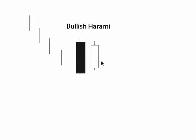The next candlestick is going to open above the close of the previous day and close below the open of the previous day. So it's an inside day, closing within the open and close of the previous day. Your bullish candlestick is going to close inside the previous day's range — the open and close anyway, not the high and the low.